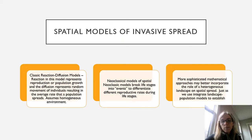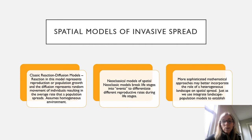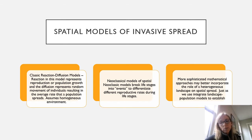There are a few different models of invasive spread worth pausing on. The simplest is the classic reaction-diffusion model, first based on a study that modeled the spread of an invasive muskrat throughout central Europe. The reaction in this model represented reproduction or population growth, while diffusion represented random movement of individuals out from a population core area, resulting in an average rate of population spread. This model assumes a homogeneous environment and fairly consistent population growth rate — assumptions that generally don't hold in reality.